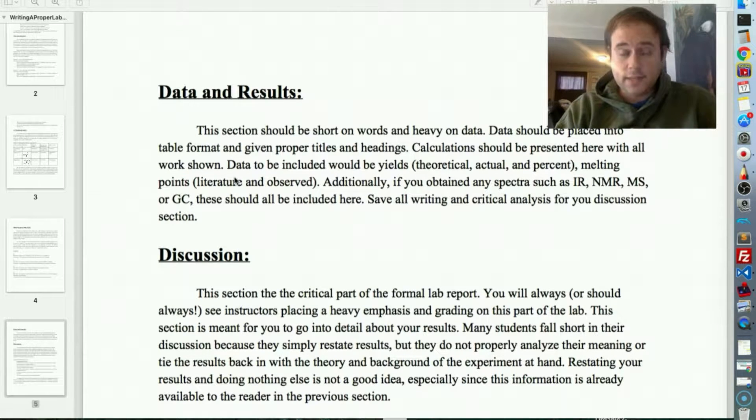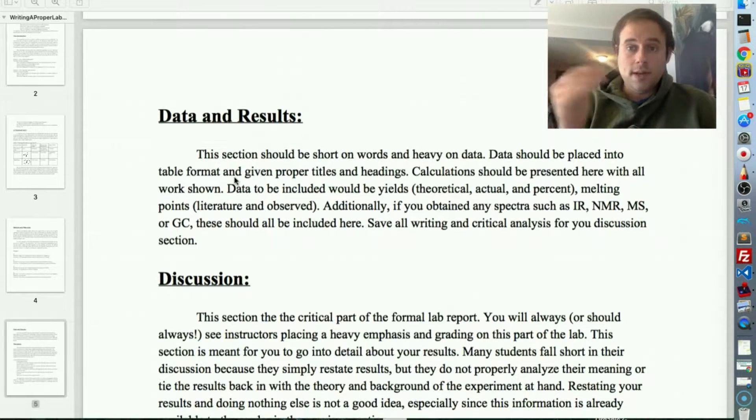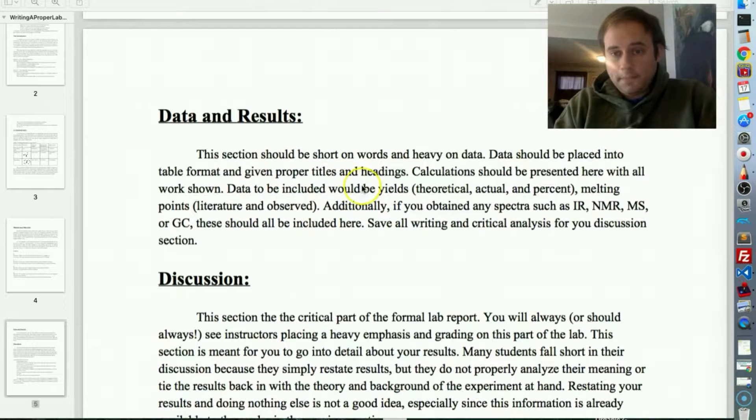Data and results. This is going to be surprisingly short when we discuss this section, although it can be fairly heavy in terms of the amount of work you have to put in. This section should be short on words and heavy on data, hence that's why it's going to be short, because it's going to depend on your data itself. It's not really discussing or talking about anything. So, very short on words. If you write a data and results section and you see you're starting to put in paragraphs, sentences at the most, and even then, you're really looking at just providing the data. Data should be placed into table format, sort of like the chemical index we saw, but now it should have data values based on your observations and what you collected.